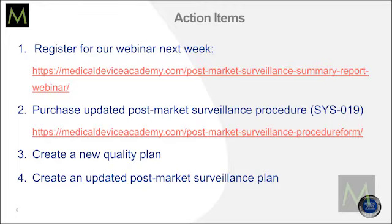Whenever you're making a change to a quality system, you're typically expected to have a quality plan. The FDA is very vague on this — some people say their quality manual is their quality plan. That's not really what they meant in ISO 13485. What they meant is a step-by-step with milestones and who is responsible: what changes are you going to make, who's going to revise the procedure, who's going to review it, when are you doing an internal audit to make sure the new procedure is effective, who's going to train the people, and when do they need training by? That's what belongs in a quality plan.